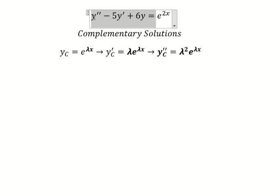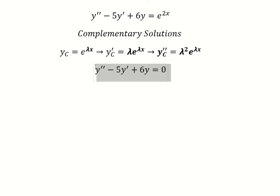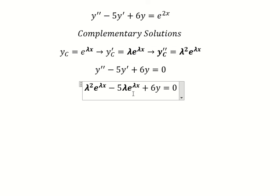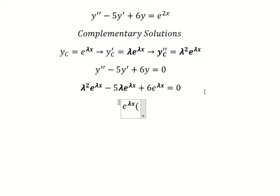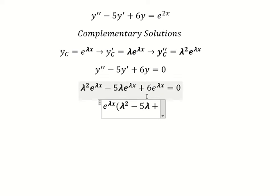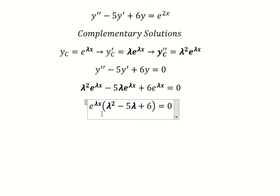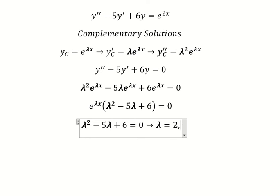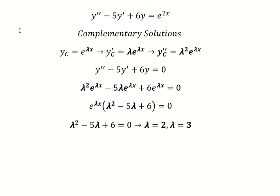I will set this equal to zero. Next, I will substitute these expressions in. We can factor out e to the power of lambda s, and set that equal to zero to find the solutions for lambda. So lambda equals two and lambda equals three.